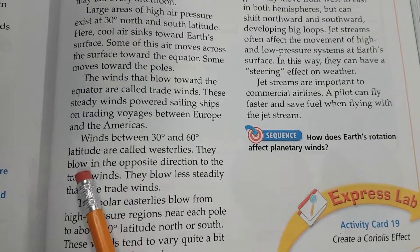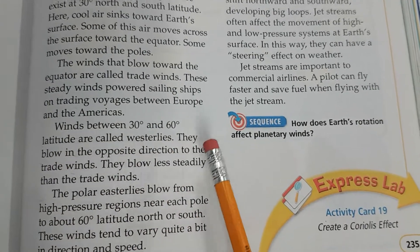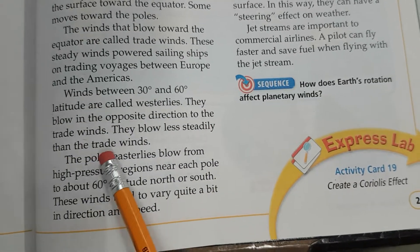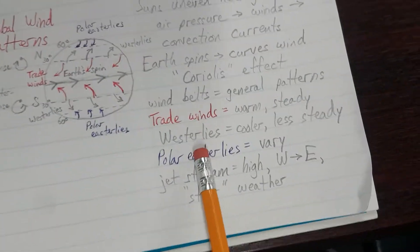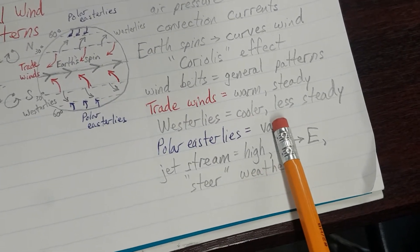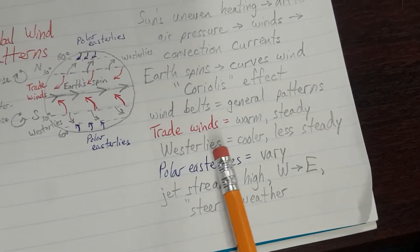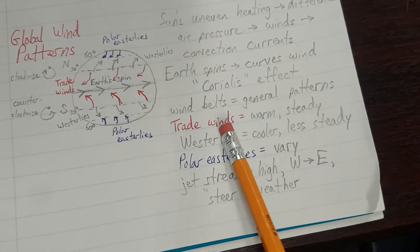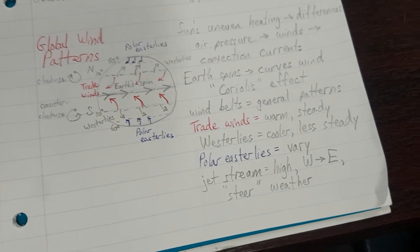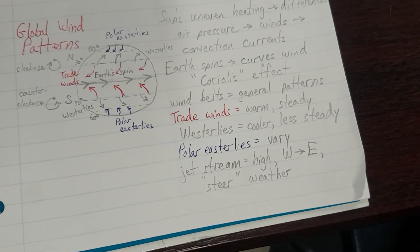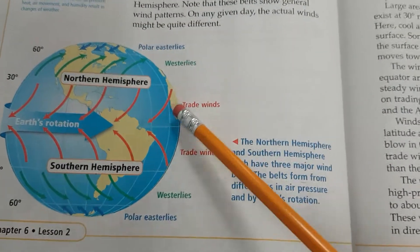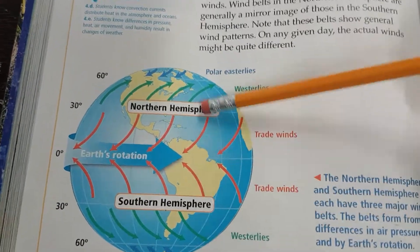Winds between 30 and 60 degrees latitude are called westerlies. They blow in the opposite direction to the trade winds and less steadily. Westerlies equal cooler, less steady. They'll blow, then maybe after a few days or a couple weeks they won't blow, then they'll blow again — it's kind of an on-again-off-again thing. The trade winds seem to blow pretty steadily; the westerlies, not as much.